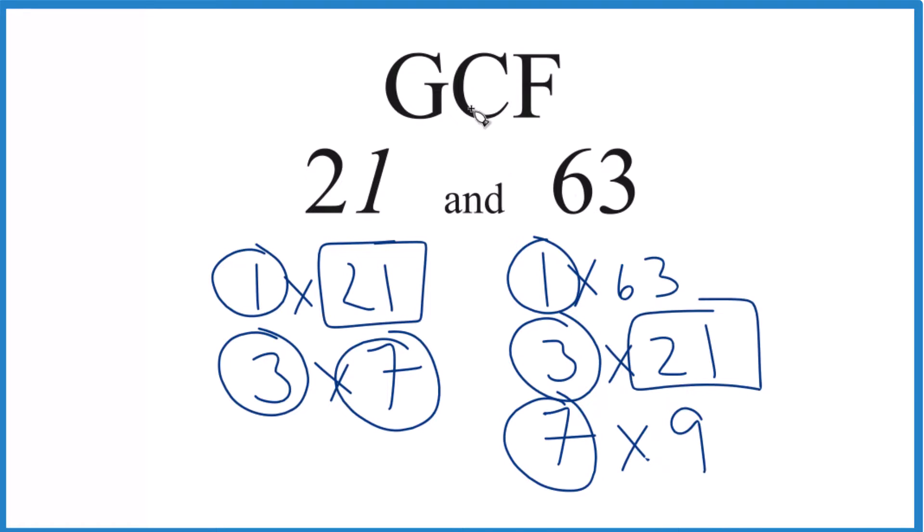So in answer to our question, the GCF for 21 and 63 is 21. There are other ways to do this, like prime factorization, but unless you have a pretty big number, this works well.